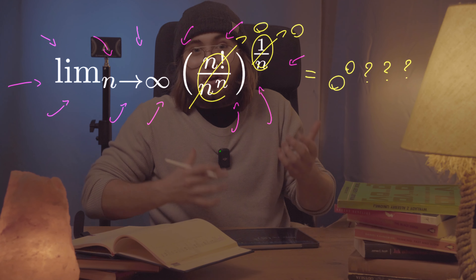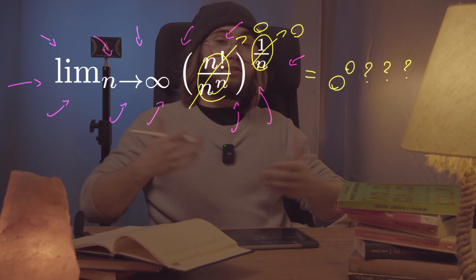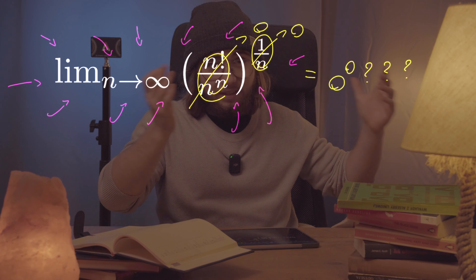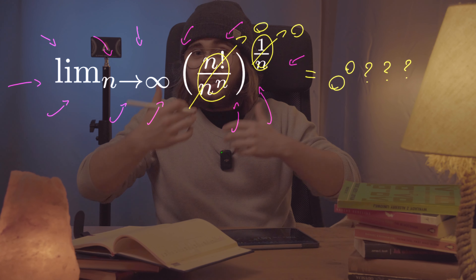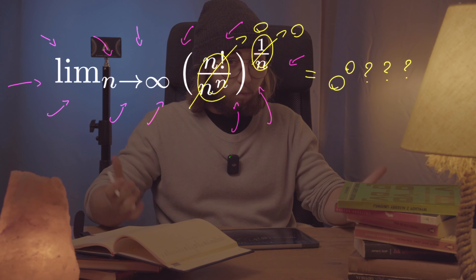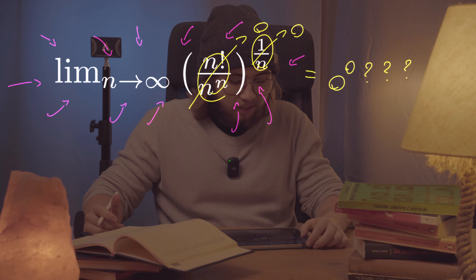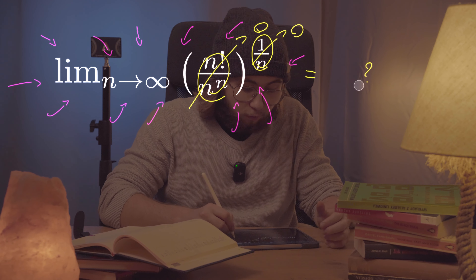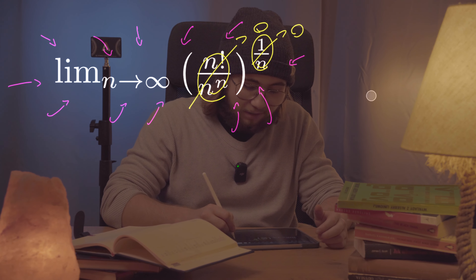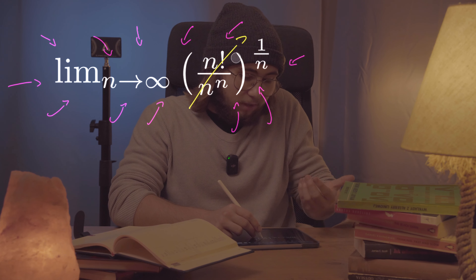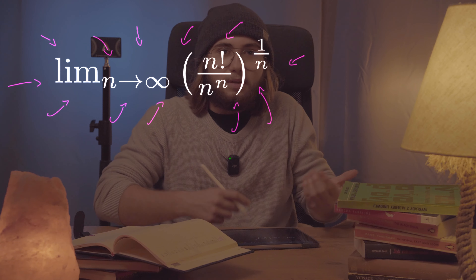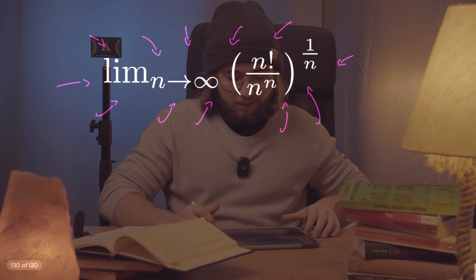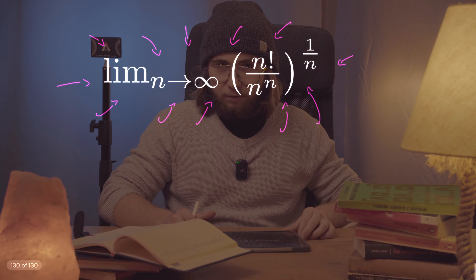Zero to the zero is pretty undefined — we have no idea what it might be. Sometimes it turns out to be e, sometimes infinity, sometimes one. So we'll have to evaluate it using some different methods.